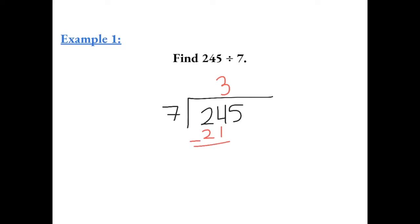We're going to subtract and we get 3. Now you're going to carry down the 5. 7 goes into 35, 5 times. 7 times 5 gives us 35, so we have no remainder. So the answer to this is 35.